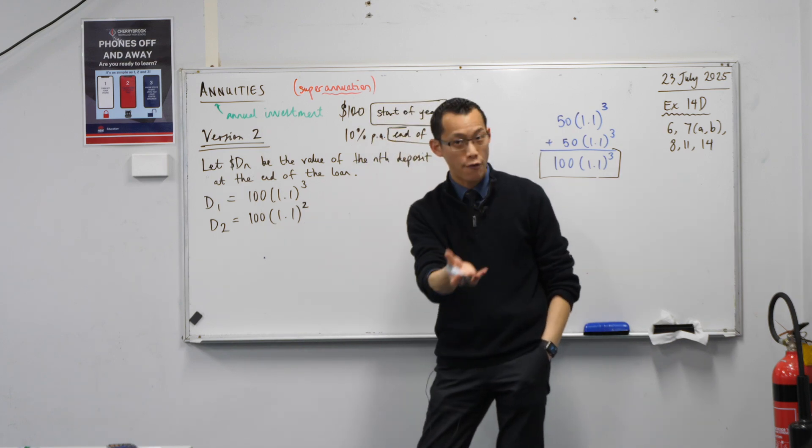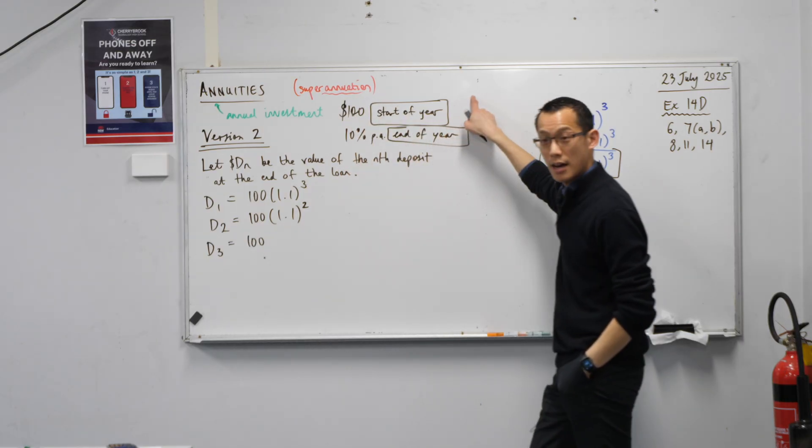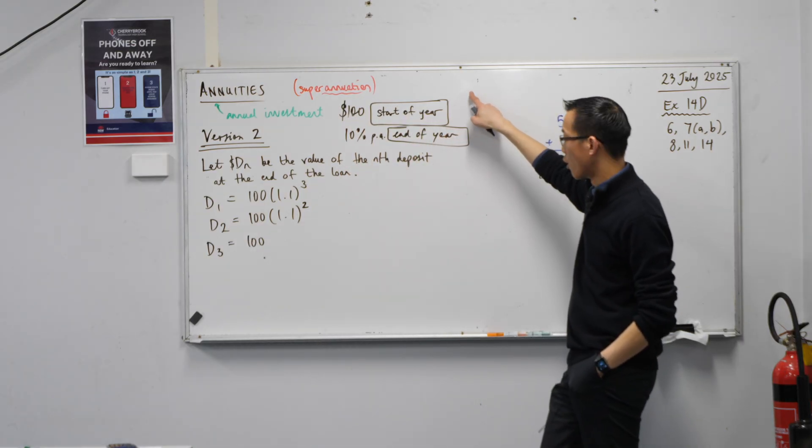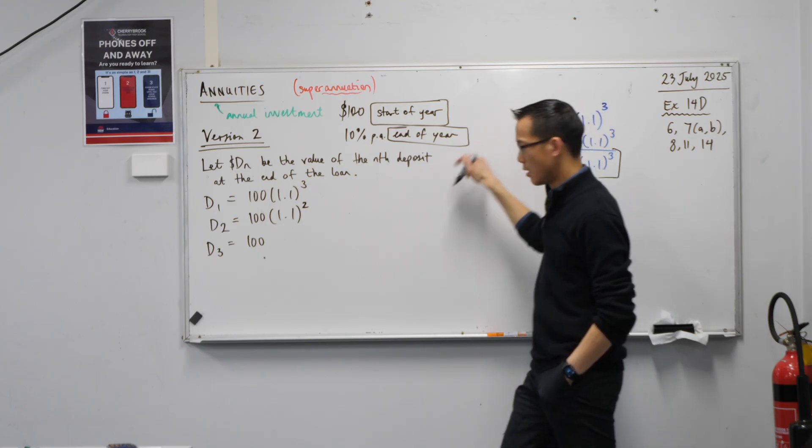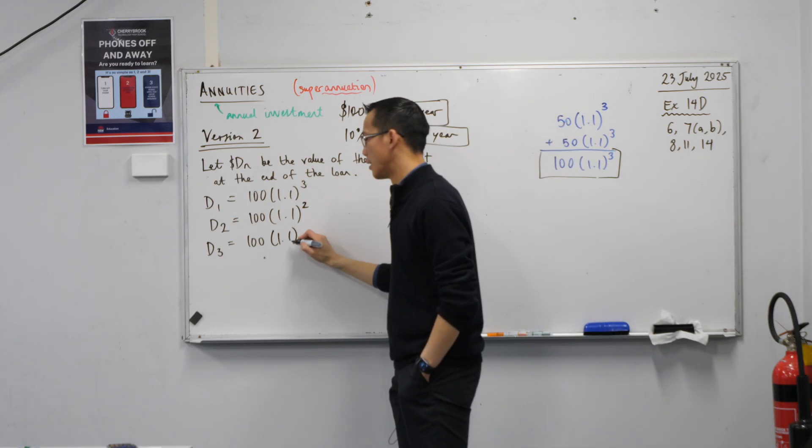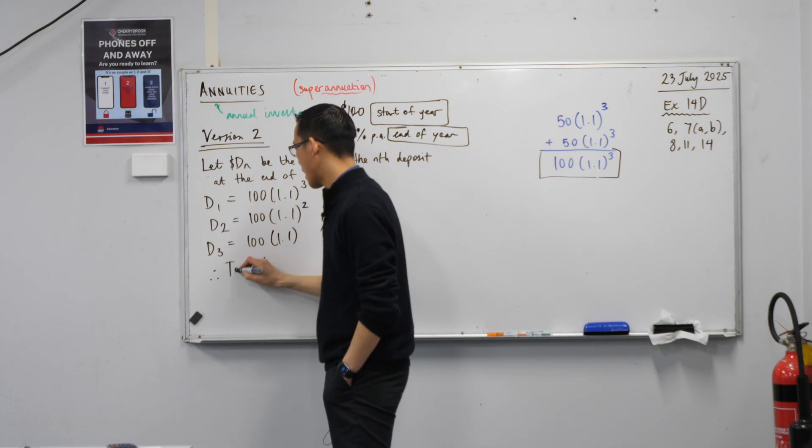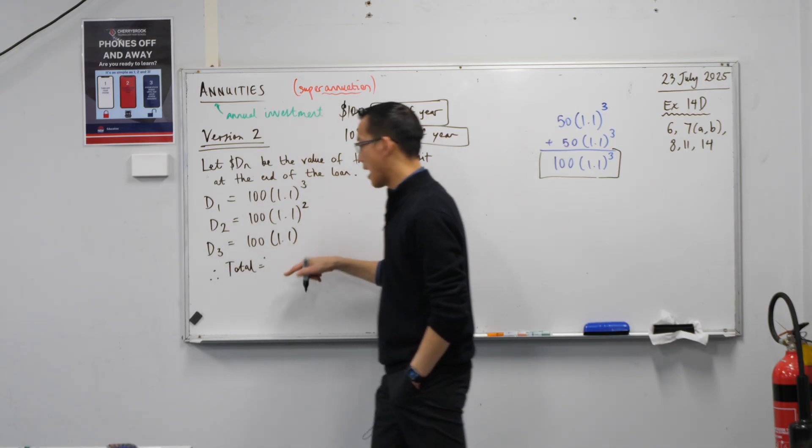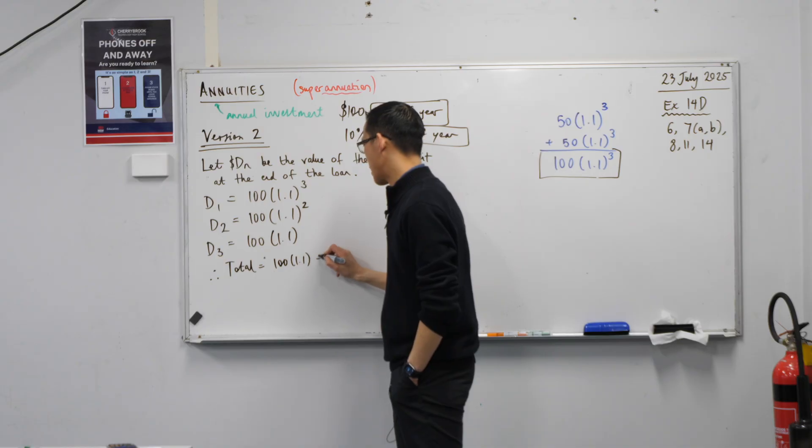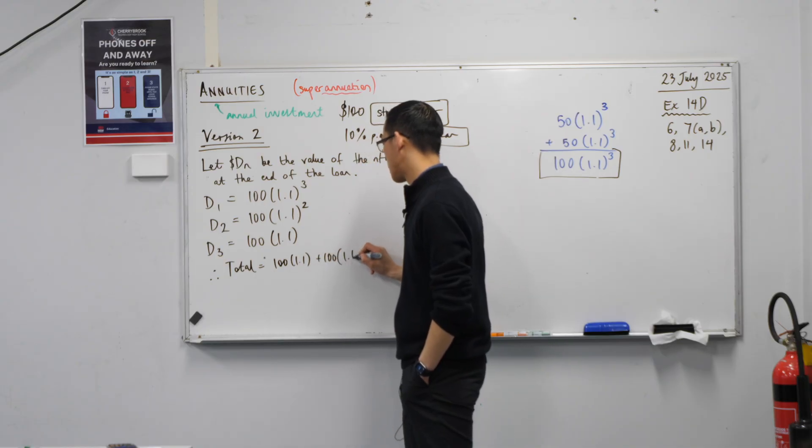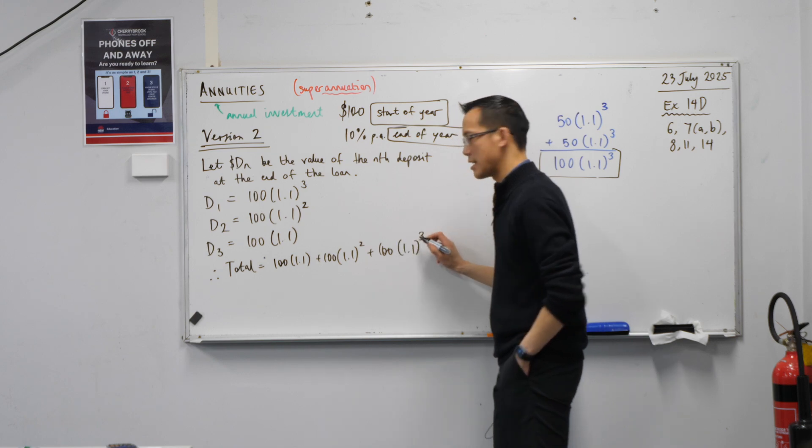And then here comes the final one. So we're in the final and third year. You put that $100 in at the start of the year, and it gets a grand total of one interest calculation applied to it. Make sense? So therefore, I just multiply by 1.1 a single time. You can see the pattern. So therefore, I can now say the total is, and I just put them in sequence. I find it easier to read if I put them in ascending order, so that makes it reverse chronological. But there you go.